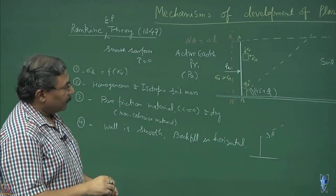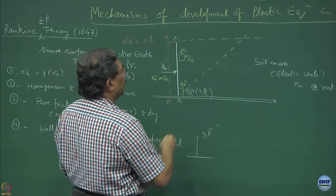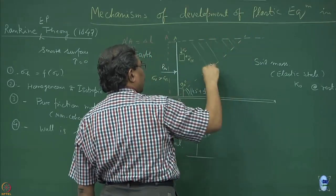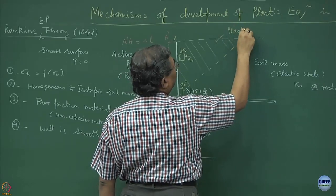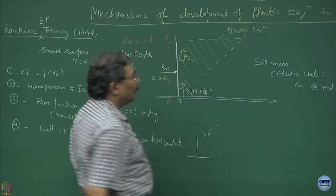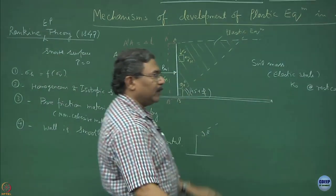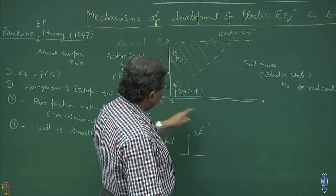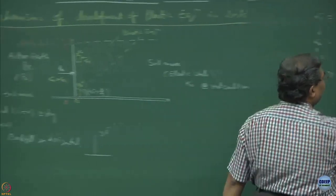Because of the movement of the wall away from the backfill, what you will observe is that this whole block is going to be under a state of plastic equilibrium. We talked yesterday, using the concepts of the Mohr circle, about P1 and P2 and how these slip surfaces are going to be inclined. Under active condition, this is going to be 45 plus phi by 2, and this is the equation I have derived.